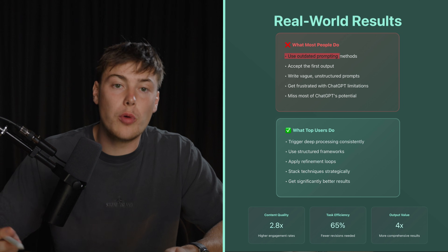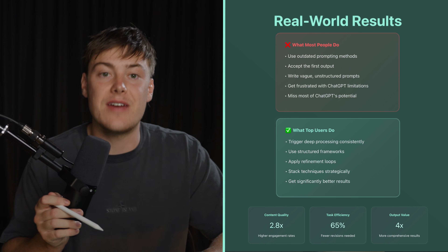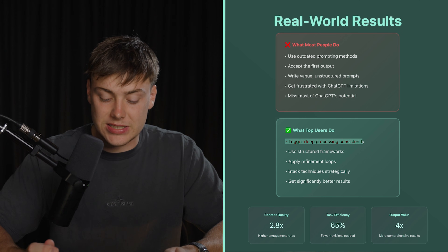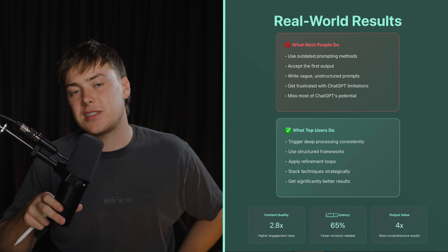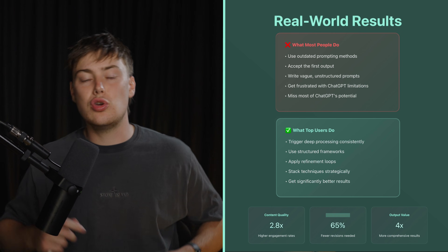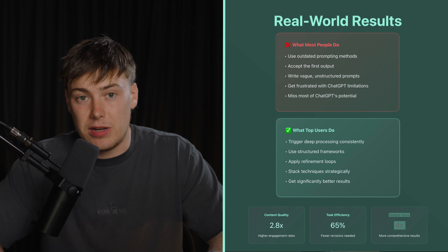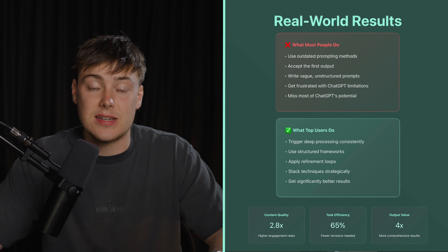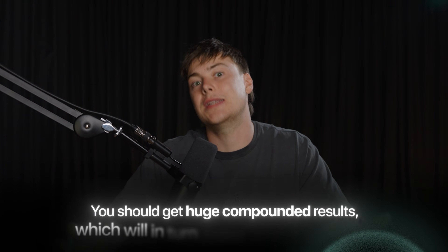Most people use old prompting methods or are just lazy with their prompts. Smart people — those using AI to augment their life and business — use triggers to process information consistently and use structured frameworks to get the most out of their prompts. This is also a time efficiency thing: if you're doing a prompt on a business idea for 30 minutes, getting 4x the output in those same 30 minutes means you get two hours worth of research done. Implement this consistently over time and you should get huge compounded results, which will in turn make you more money.